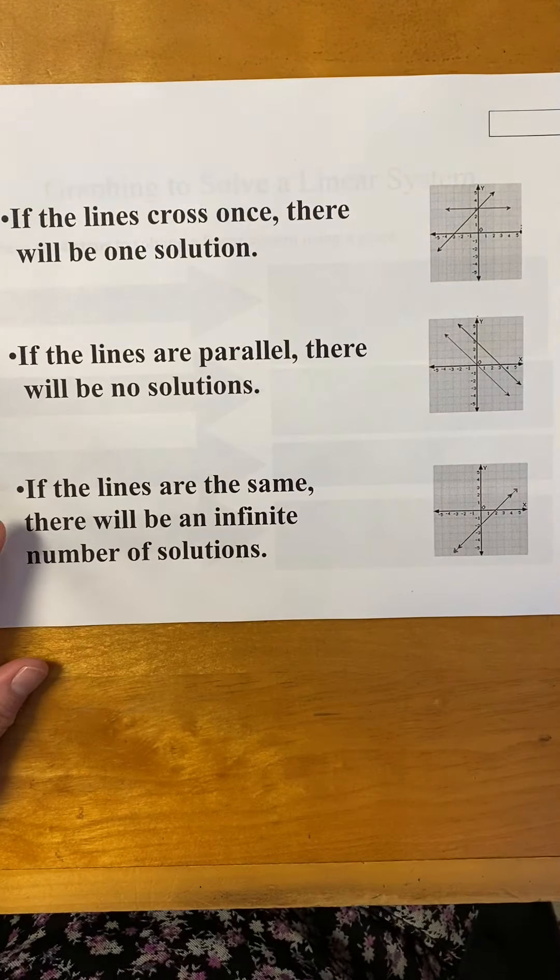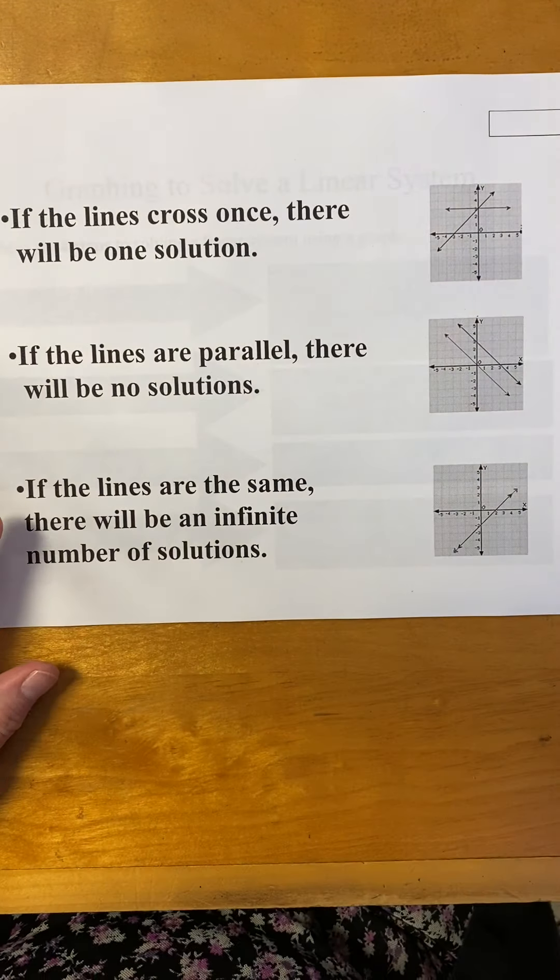Let's look at what can happen when you graph a linear system. When you graph a couple of equations, one option is that they'll overlap in one spot, and that one spot will be the one solution. For this example, they intersect right here, so the solution would be over zero, up three. If they intersect in one spot, there's one solution and that solution is wherever they cross.